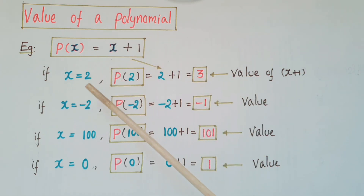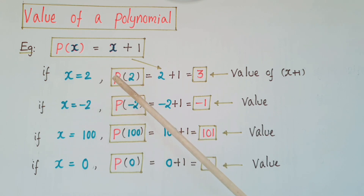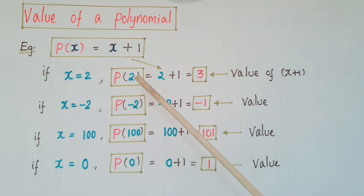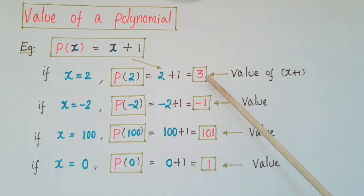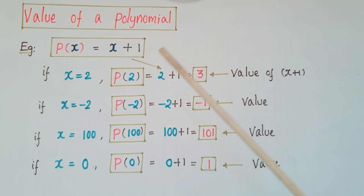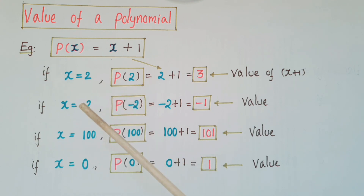So if x is equal to 2, then replace the x value here as 2. Then p(2) = 2 + 1, that is 3. So here 3 is called the value of this polynomial when x is equal to 2.